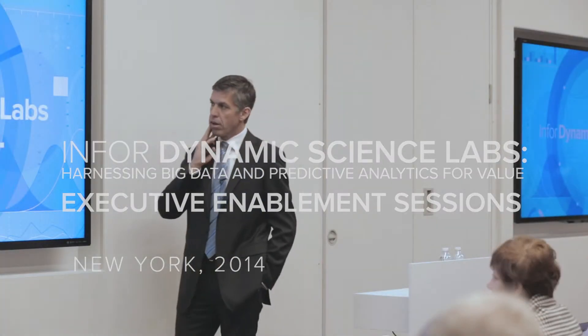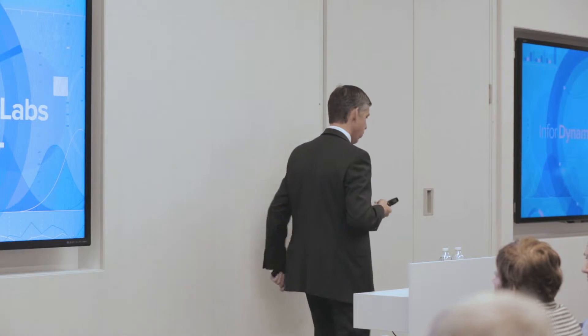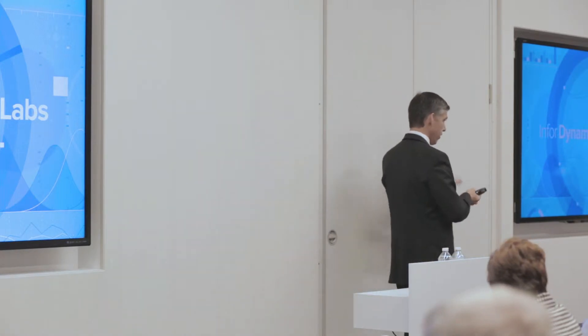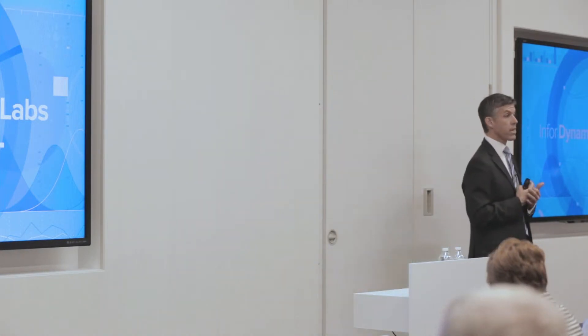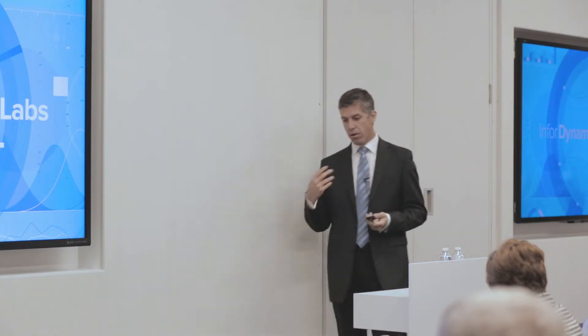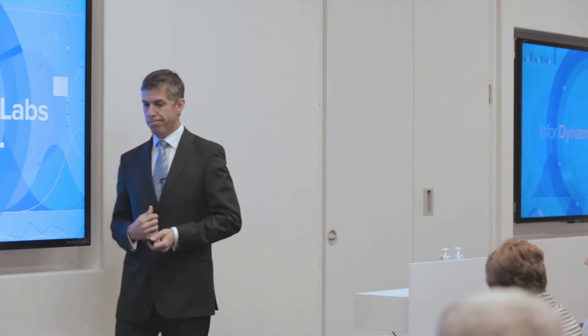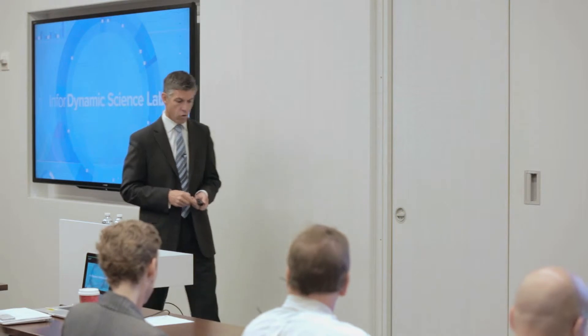A topic I wanted to touch on was something called Infor Dynamic Science Labs. Most of you that have followed Infor over the last four years know that one of our strategies, and Charles talked about at the beginning, was to compete on user experience. And to do that you need to build a core competence in it. So we built our own interactive design agency inside Infor called Hook & Loop. We've got almost 110 designers on staff in New York.